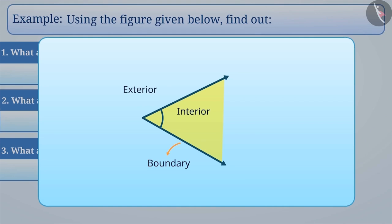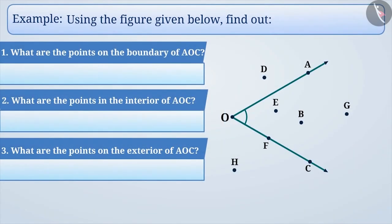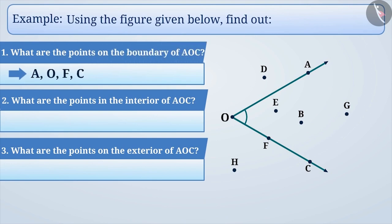Let me solve the given questions based on this understanding. As you can see, the given figure has point A, point O, point F, and point C on the sides of the angle. So we can say that all these points are at the boundary of the angle.